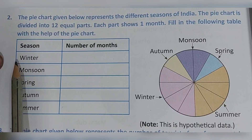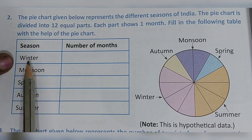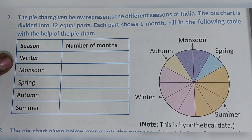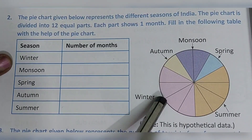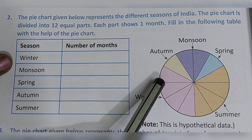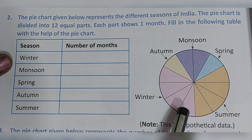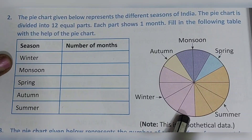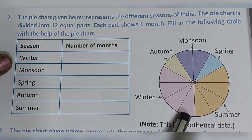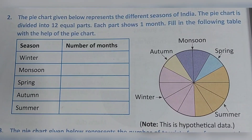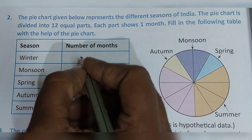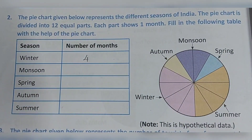First, what season is given? Winter. Look at the pie chart — winter is represented in pink color. How many pink parts are there? One, two, three, four — so four months. Write four.